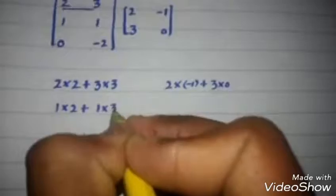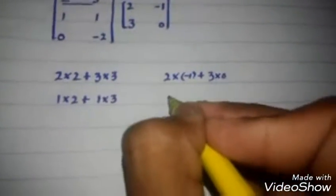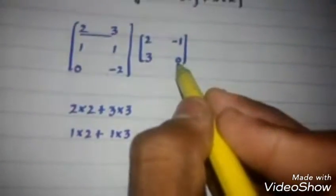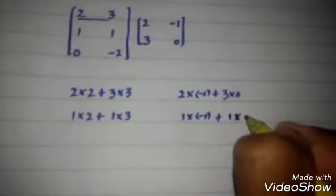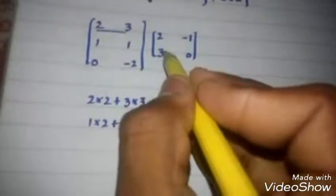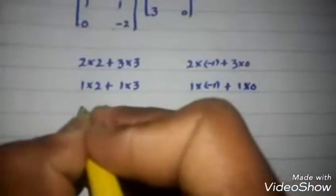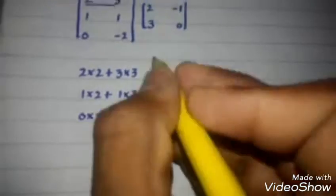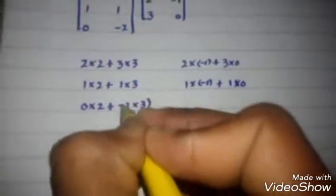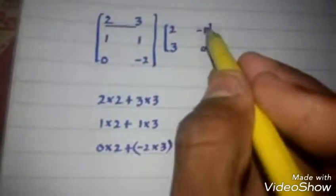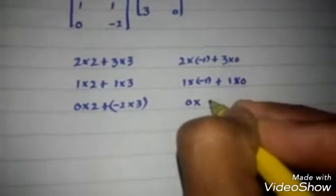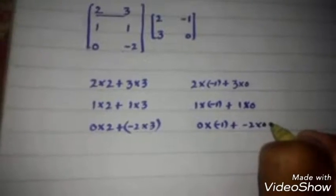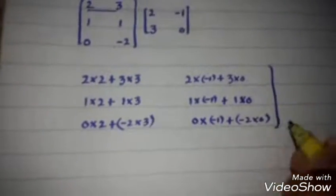Second row by second column: 1×(−1) + 1×1. Second row by third column: 1×2 + 1×3 and 1×0. Third row by first column: 0×2 + (−2)×3. Third row by second column: 0×(−1) + (−2)×0.